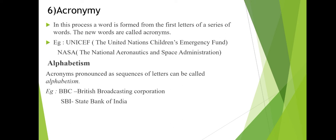The next one is alphabetism. Acronyms pronounced as sequences of individual letters are called alphabetism. For example, BBC stands for British Broadcasting Corporation. You take the first letter of each word and pronounce them individually as letters — you do not pronounce it as a single word. That process is called alphabetism. Another example is SBI.